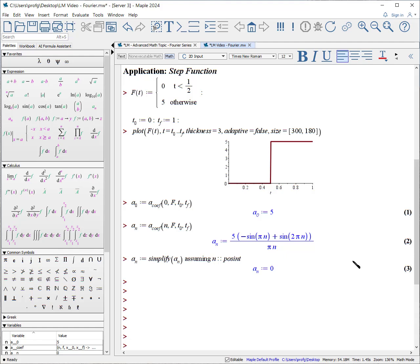Let's find the b terms, and we will help it by saying assuming n is a positive integer, and we get a nice simplified expression.